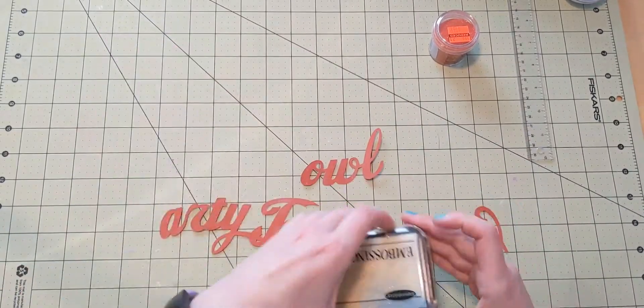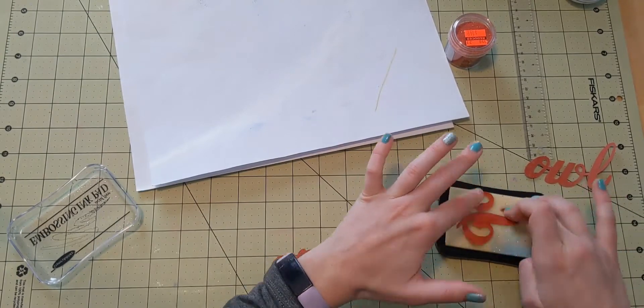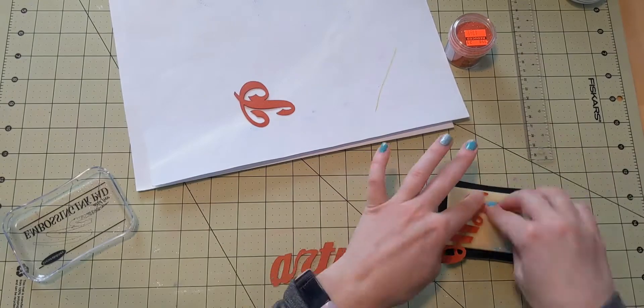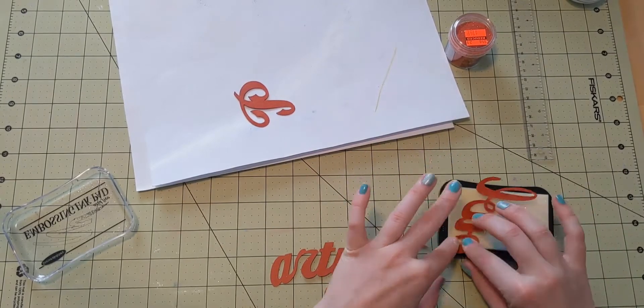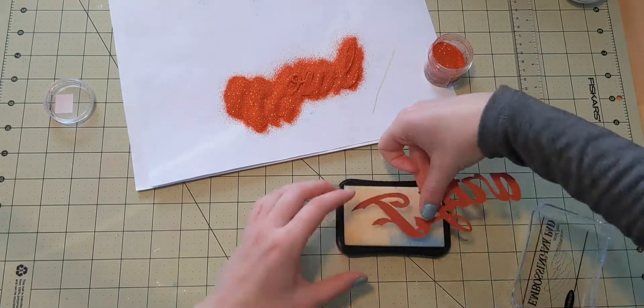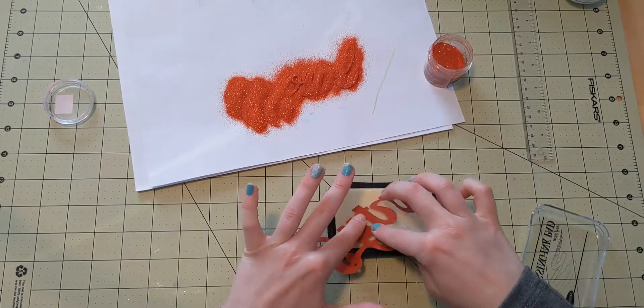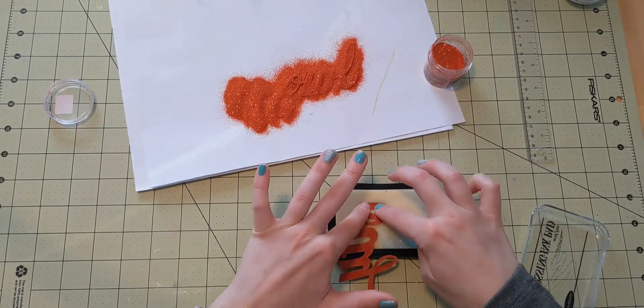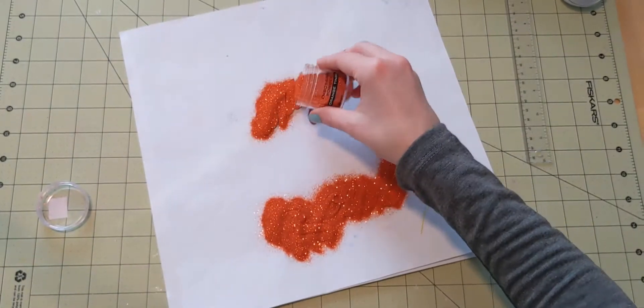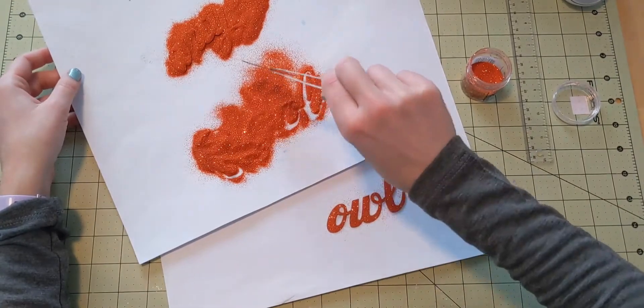I take an older embossing pad. This is one that was a gift or a hand-me-down or something. And I use it for projects that I'm not sure if it will destroy my Versamark pad. So I'm putting a little bit of the ink all over all of the words for the title. I'm really squishing it down there, and then I'm using an embossing tinsel.